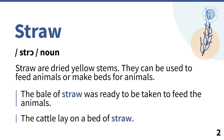Straw. Straw are dried yellow stems. They can be used to feed animals or make beds for them. The bale of straw was ready to be taken to feed the animals. The cattle lay on a bed of straw.